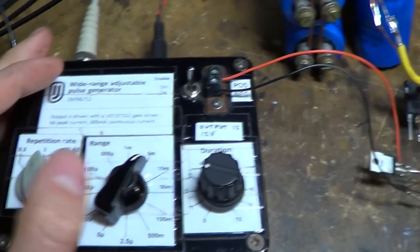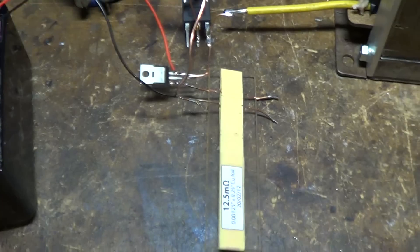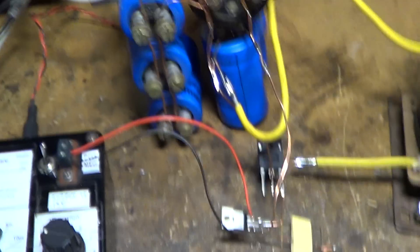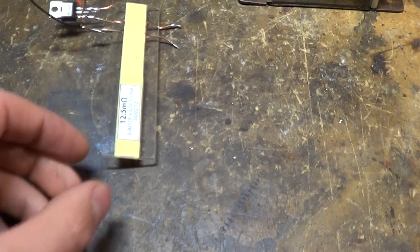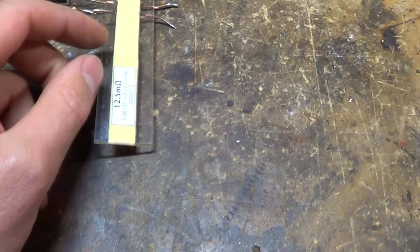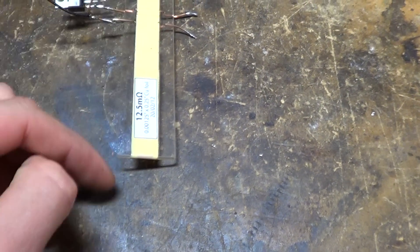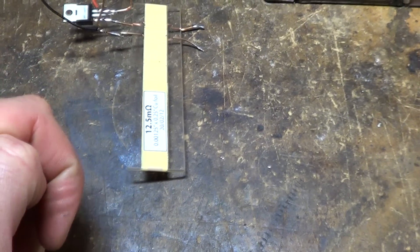MOSFET is driven with my adjustable pulse generator, and we'll look at the waveforms on the scope. This current sensor resistor is actually just a piece of copper foil folded round to eliminate the inductance.